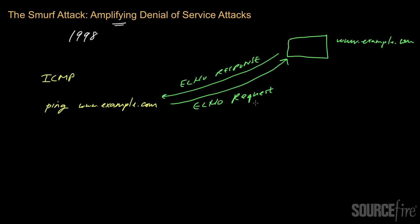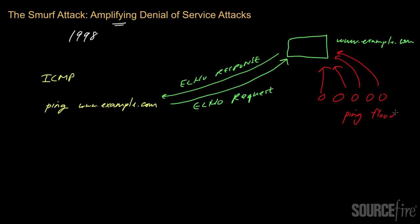The echo response lets the requester know that everything is running fine, and ping is a good way to ascertain if a particular server is up and running. Now imagine an attacker decided to send a large stream of ping requests from multiple systems, flooding a target system. The attacker could potentially saturate the server's resources so it can't handle legitimate traffic. This is known as a ping flood — a very primitive form of denial-of-service attack, since the attacker needs a lot of systems to target the one system.